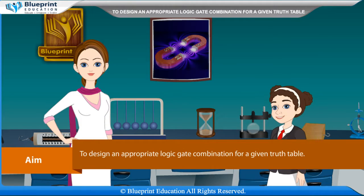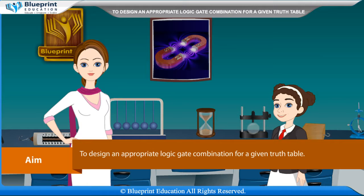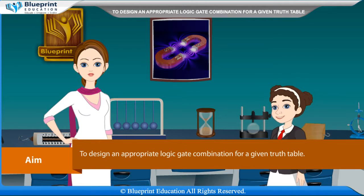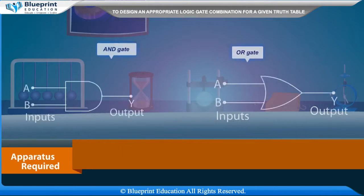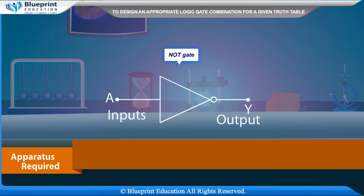Our aim here is to design an appropriate logic gate combination for a given truth table. The apparatus required are: AND gate, OR gate, and NOT gate.